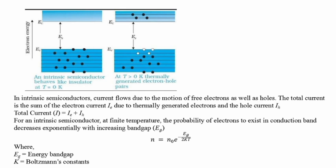Total current I equals Ie plus Ih. An intrinsic or pure semiconductor behaves like an insulator at T equal to zero Kelvin, and at T greater than zero K the thermally generated electron-hole pairs can participate in electrical conduction. For an intrinsic semiconductor at finite temperature, the probability of electrons existing in the conduction band decreases exponentially with increasing band gap. The carrier concentration n equals N0 times e to the power minus EG over 2kT, where EG is the energy band gap and k is Boltzmann's constant.